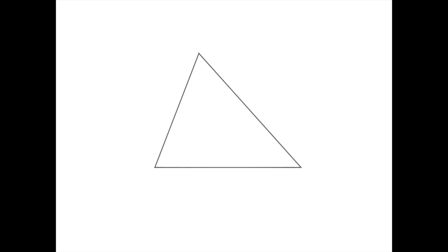Today the topic is the Miquel point. Generally there exist two Miquel points: one for a triangle and one for a quadrilateral. First we're going to see what it is for a triangle.